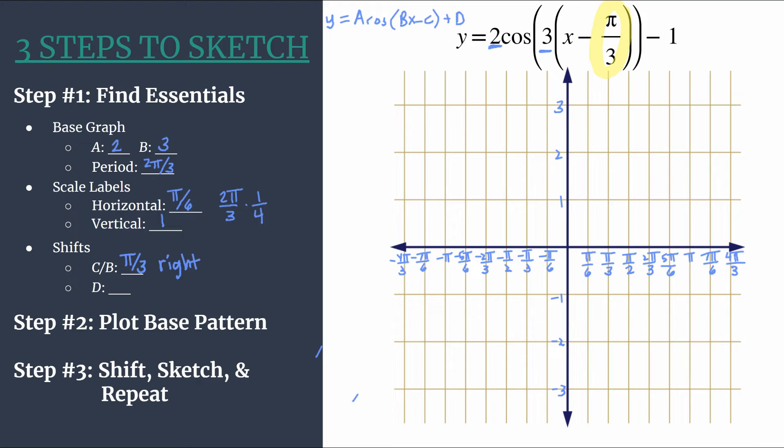We're moving to the right pi over three units. And notice on our graph, because we've been labeling by pi over six on our horizontal axis, this will be two grid units. Would be equivalent to pi over three. And then our shift vertically is down one, that negative one at the end, that D term.